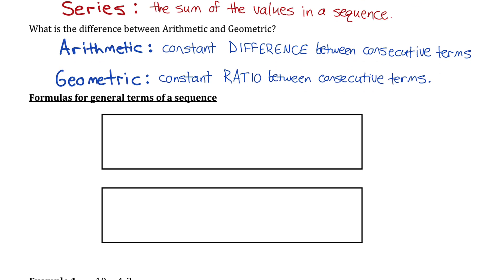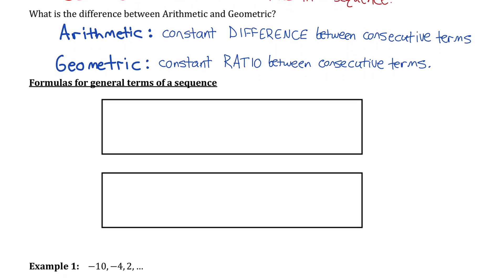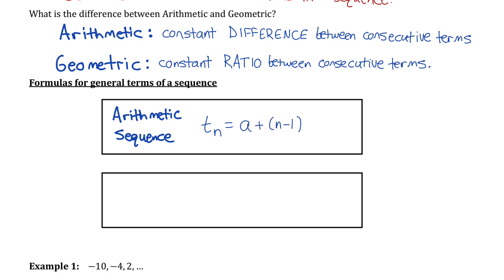Let's review the two formulas for the general terms of both an arithmetic and geometric sequence. For an arithmetic sequence, to find the value of any one term — say term n — you take the first term, a, and add the common difference d, n minus 1 times. For a geometric sequence, to find the value of any one term, you take the first term a and multiply by the common ratio r, n minus 1 times.